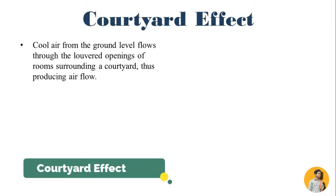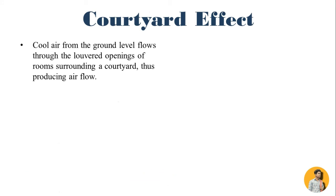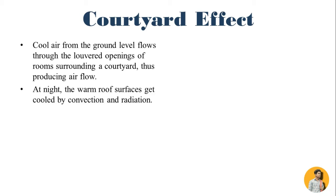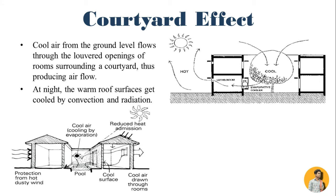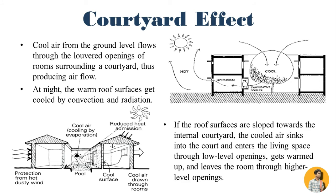Courtyard Effect: Cool air from the ground level flows through the low-level openings of rooms surrounding a courtyard, thus producing airflow. At night, the warm roof surfaces get cooled by convection and radiation. If the roof surfaces are sloped toward the internal courtyard, the cold air sinks into the courtyard and enters the living space through low-level openings.